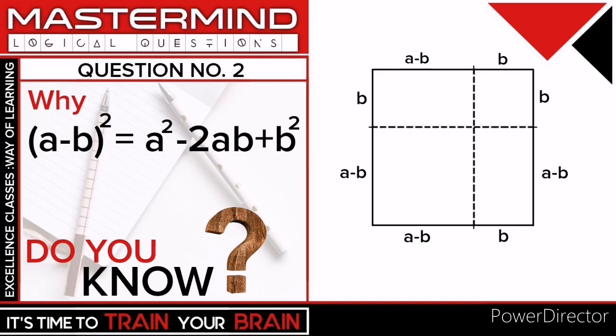Now think, what is the area of this big square? Because the side of this square is a, so its area will be a².